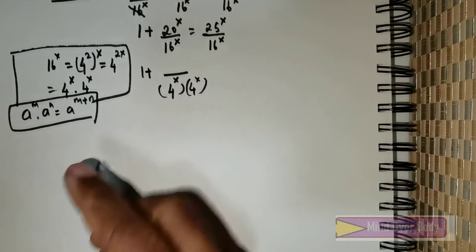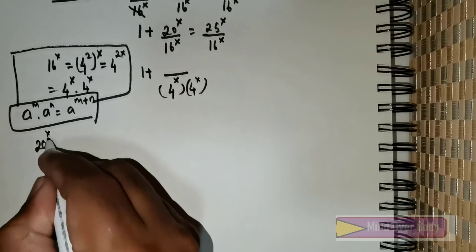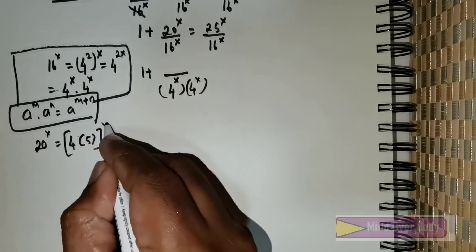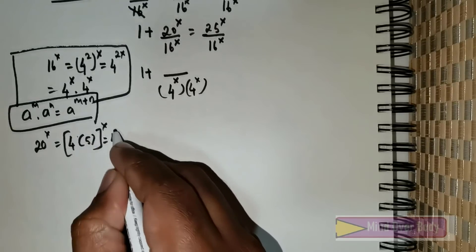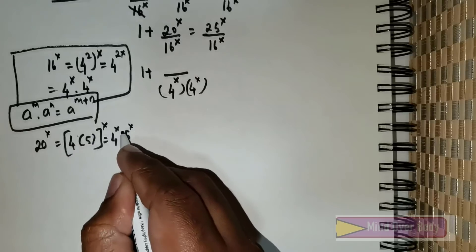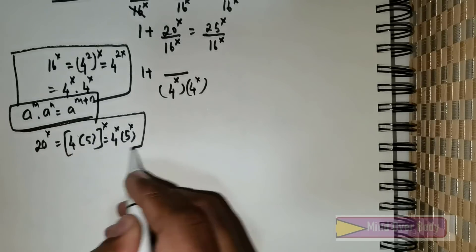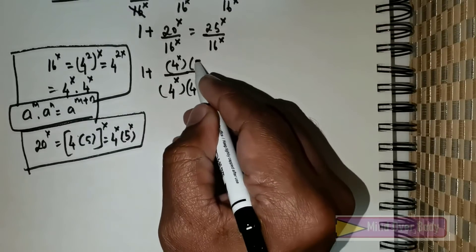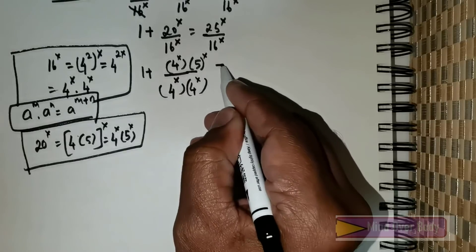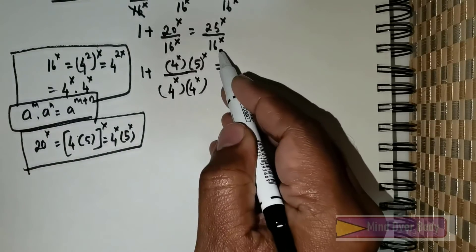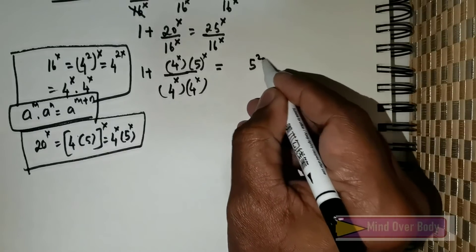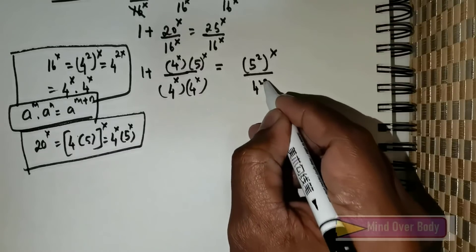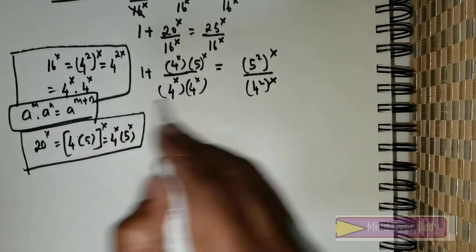Now, 20 raised to the power x can be written as (4 times 5) raised to the power x, which is 4^x times 5^x. On the right side, I have 25 over 16. Now, 25 is 5 squared raised to the power x, and 16 is 4 squared raised to the power x. So this is the system I have.